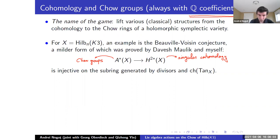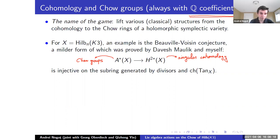They conjecture that on the sub-ring of Chow generated by divisor classes and the Chern classes of the tangent bundle, you should see injectivity. In other words, any polynomial relation between divisors and Chern classes of the tangent bundle in the world of algebraic cycles holds if and only if it holds in the world of singular cohomology. With Davesh Maulik, we did not prove this conjecture; unfortunately, we proved a milder version which entails injectivity on the sub-ring generated by divisors. Our proof is quite particular for Hilbert K3 — you can't really generalize it to other kinds of geometry.